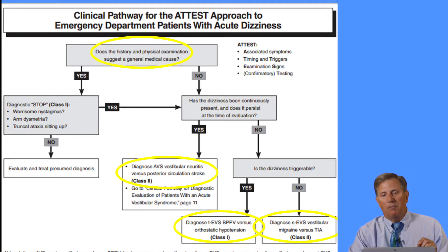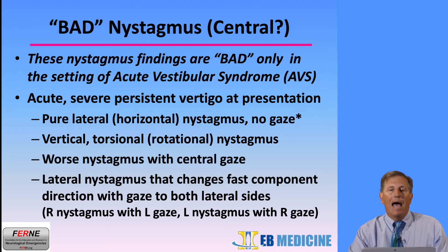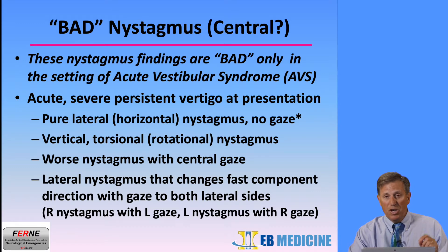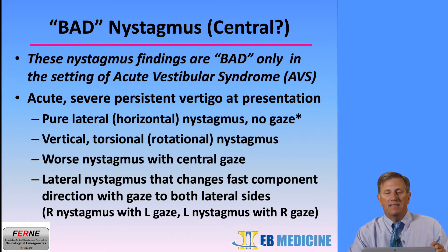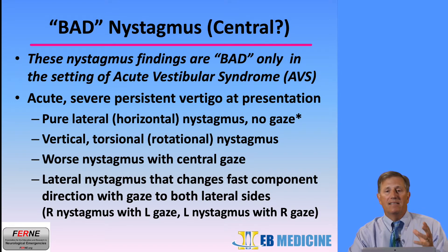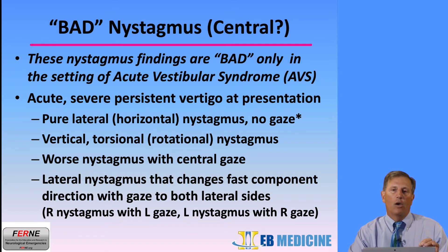I am going to talk about causes of what are likely central causes of nystagmus. These bad types of nystagmus are suggestive of a central etiology, not labyrinthine, only in the setting of an acute vestibular syndrome. If a patient has acute, severe, persistent vertigo at presentation, there are nystagmus findings that suggest a central etiology. For example, someone with five hours of severe, constant dizziness — that's acute vestibular syndrome.